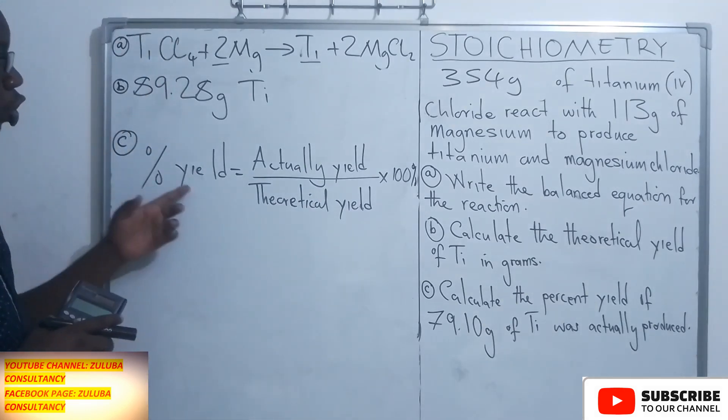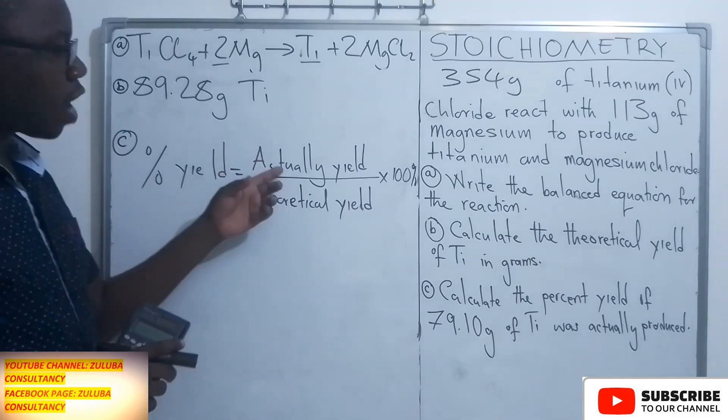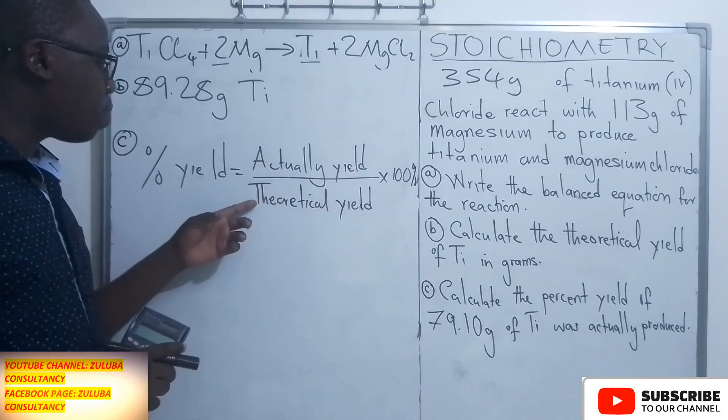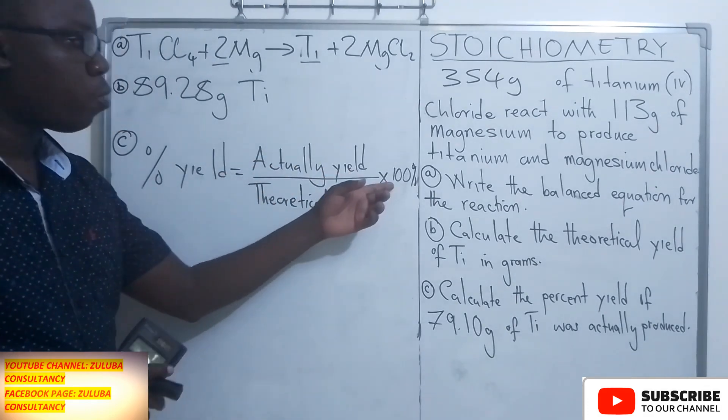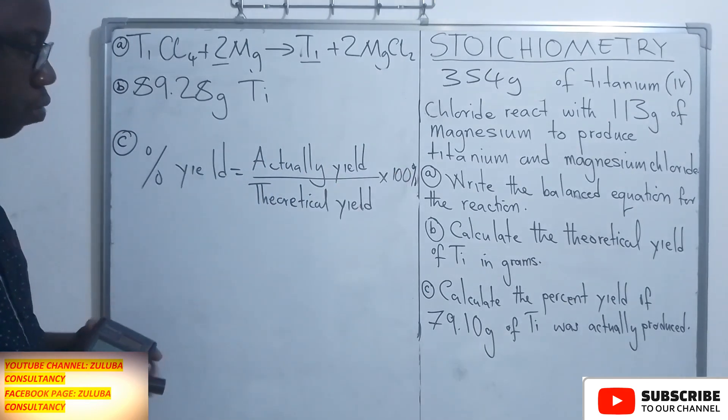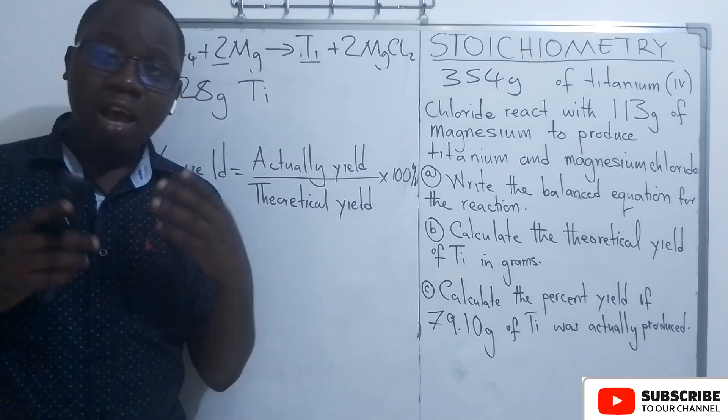We say percentage yield is equal to the actual yield divided by the theoretical yield multiplied by 100%. Now what is the actual yield?